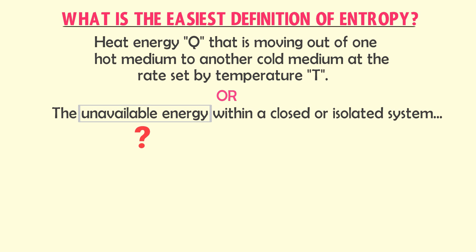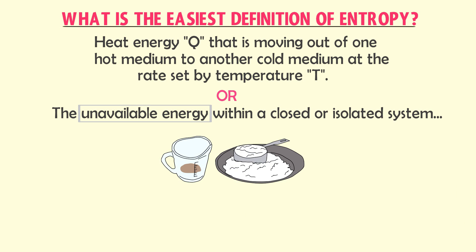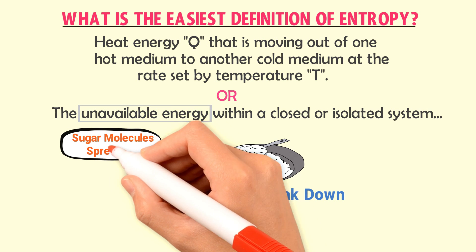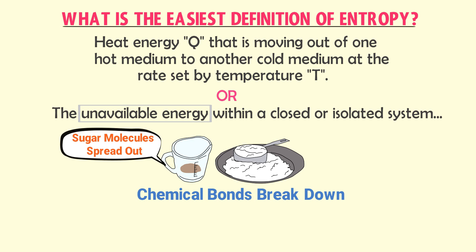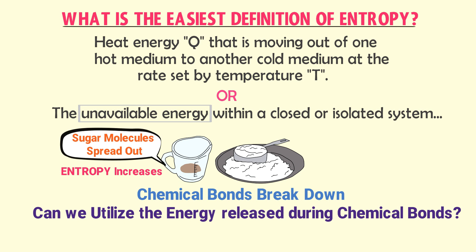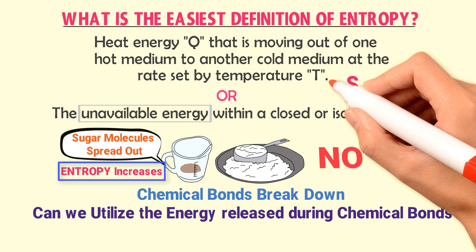Let me clarify why we call entropy 'unavailable energy.' When we dissolve sugar or salt in water, the chemical bonds among the sugar or salt molecules break down and the molecules spread out — entropy of the system increases. Can we use the energy released during bond breaking of sugar or salt molecules? The answer is absolutely no. This energy just increases the disorderness of the system, hence we call it unavailable energy.